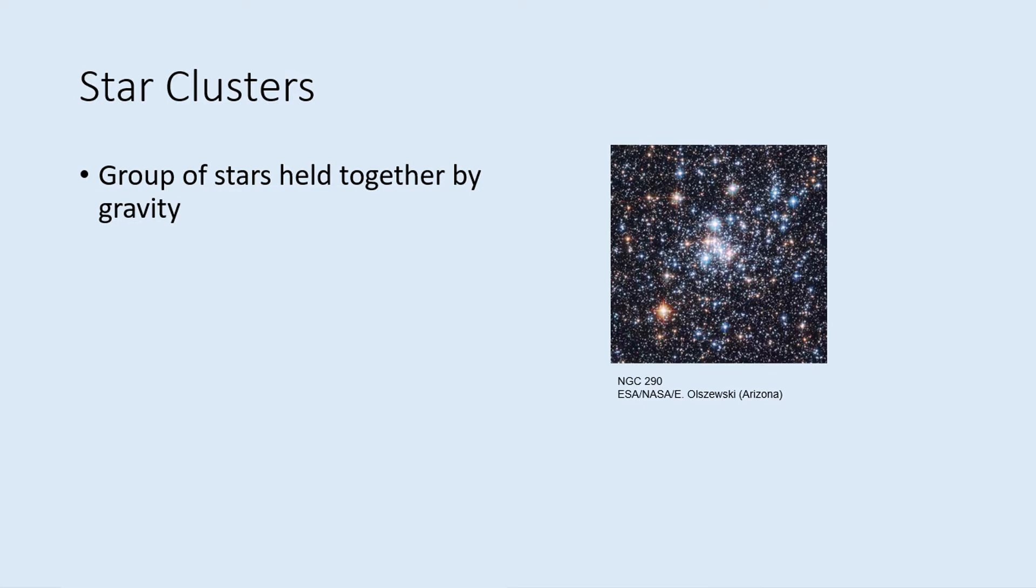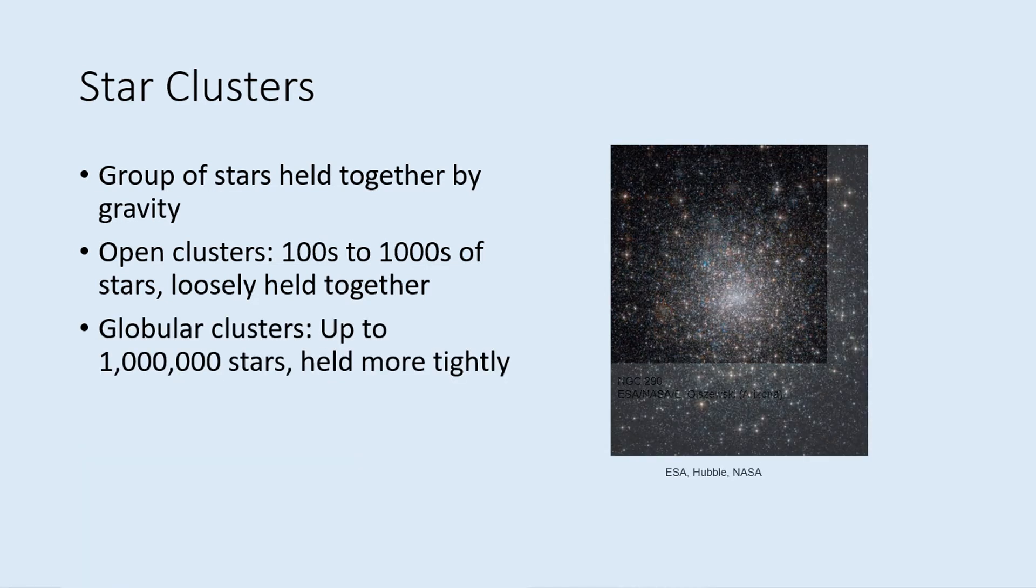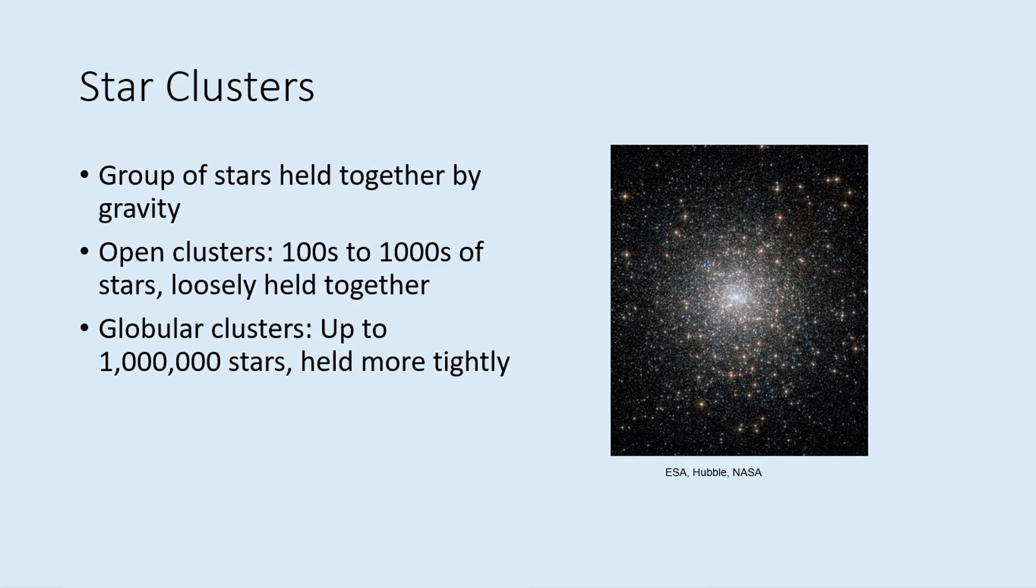Clusters come in two major types: open and globular. The open ones are smaller and more loosely held together. They tend to have hundreds to thousands of stars. Globular clusters are much larger, with some approaching a million stars, and they form a tightly bound ball of stars.